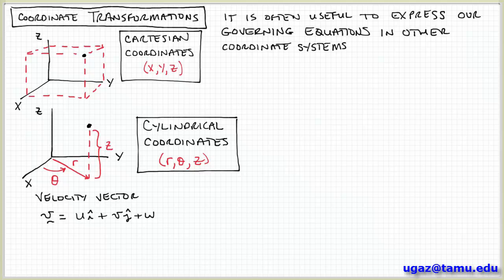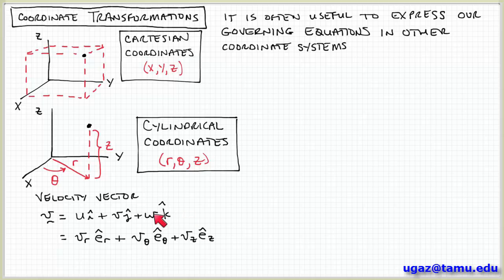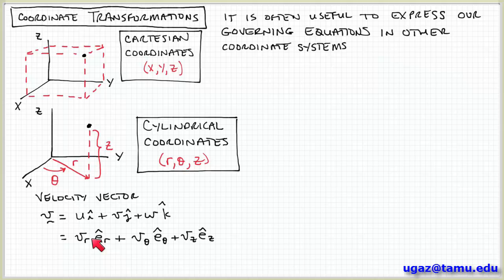We can use these coordinate systems to write not just position but also velocity, which is something we're going to be interested in for fluid mechanics. In Cartesian coordinates, we can express the velocity vector in terms of three components u, v, and w: u times the unit vector i in the x direction, plus v times the unit vector in the y direction, plus w times the unit vector in the z direction. In cylindrical coordinates, the three components are R, theta, and z: v sub r times the unit vector e sub r, plus v sub theta times e sub theta, plus the z component of velocity v_z times e sub z.